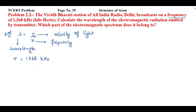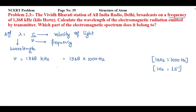Now let's see the given values. First, frequency is given as 1368 kilohertz. We have to convert this value in terms of per second. 1368 kilohertz equals 1368 into 1000 hertz, because in one kilohertz we have 1000 hertz. One hertz equals one second inverse, so this becomes 1368 into 10 raised to power 3 per second.